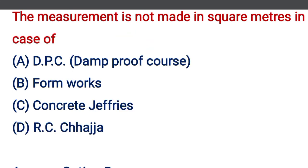The measurement is not made in square meters in case of — option A: DPC (damp proof course), option B: formwork, option C: concrete fillers, option D: or C kacha. The correct answer is option A, or C kacha.